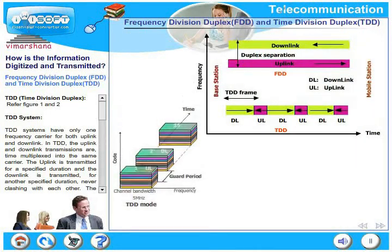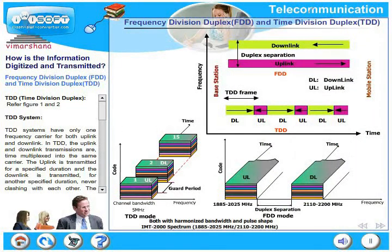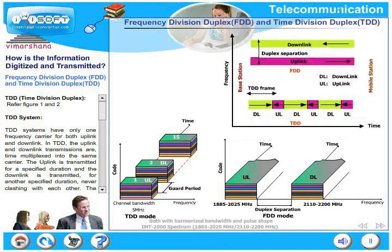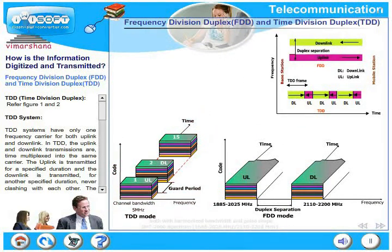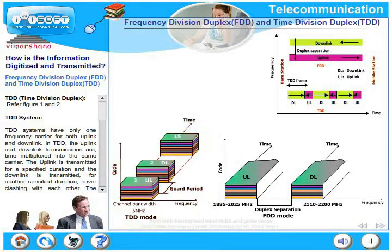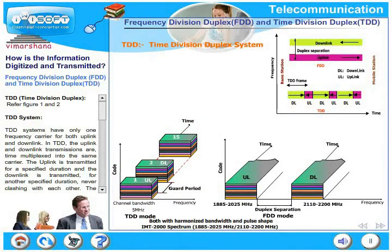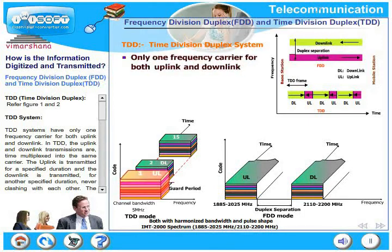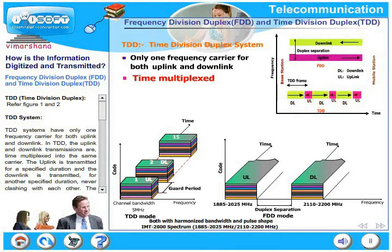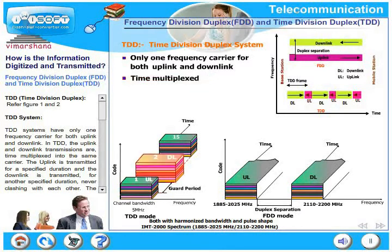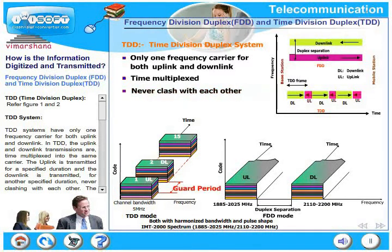Let us compare TDD and FDD in these two figures. In a TDD system, there is only one frequency carrier for both uplink and downlink. The uplink and downlink transmissions are time multiplexed into the same carrier, where uplink is transmitted for a specified duration and the downlink is transmitted for another specified duration, never clashing with each other.